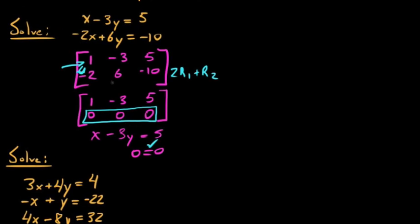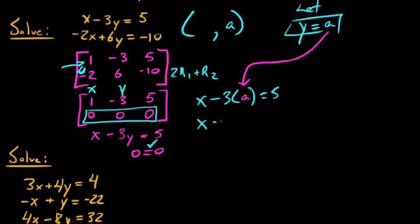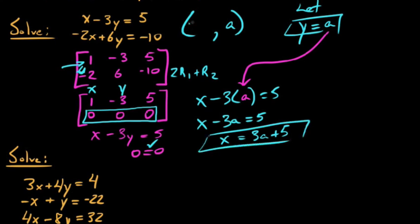When we arrive at a situation like this, we let the last variable equal a parameter. Let y equal a. Our first equation is x minus 3y equals 5. Substituting a for y gives x minus 3a equals 5, so x equals 3a plus 5. Our solution set is of the form (3a + 5, a) — anything plugged in for a satisfies this original set of equations.